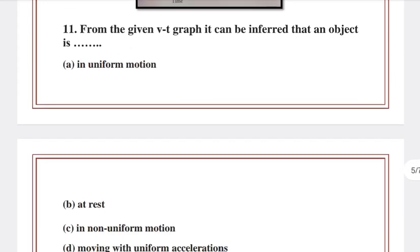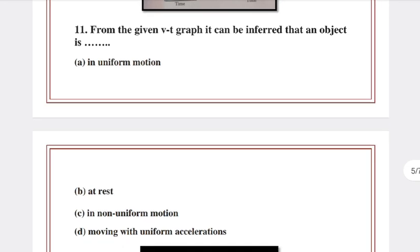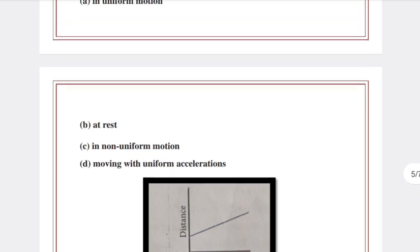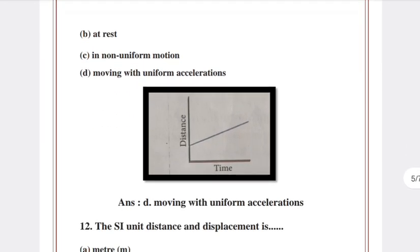Question 11: From the given VT graph it can be inferred that an object is? Answer D.